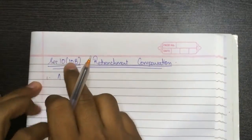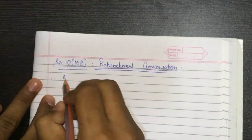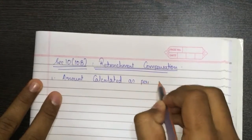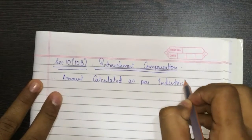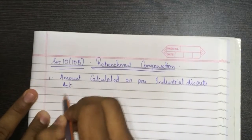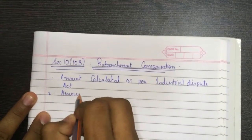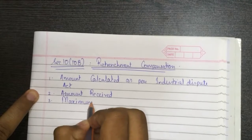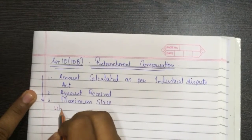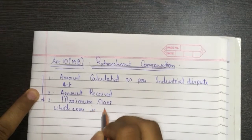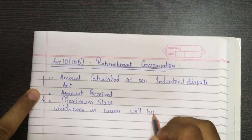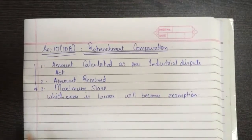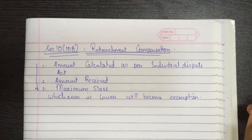The exemption under Section 10(10B) for retrenchment compensation is the lower of: the amount calculated as per the Industrial Disputes Act, the amount received, or a maximum of five lakhs — whichever is lower will become the exemption. This is the simplest exemption taught under salary. Please copy it down.